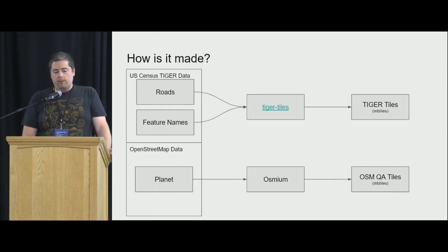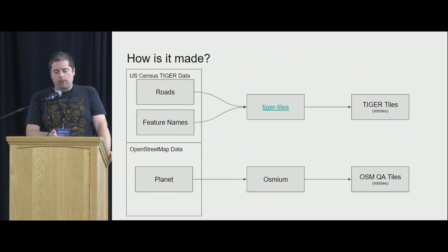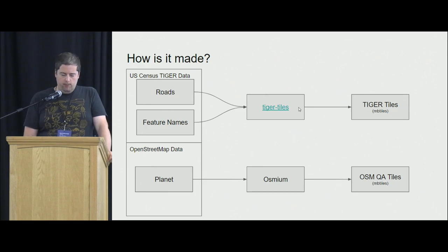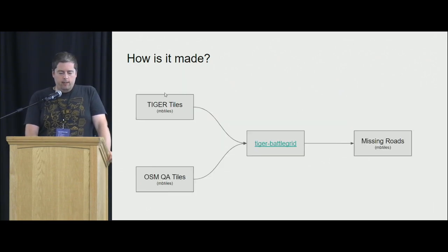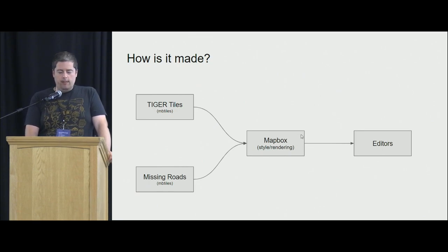Originally this talk was supposed to be 15 minutes long, but it became a lightning talk, so I left these slides in as documentation. Basically, I'm pulling in Tiger data and OpenStreetMap data, processing it through some code — there's a link in the slides if you want to see what the code is doing. Then I take the two outputs, run them through a second bit of code that generates a missing roads tileset, and those two things go together in Mapbox to generate the red and yellow layer you see.